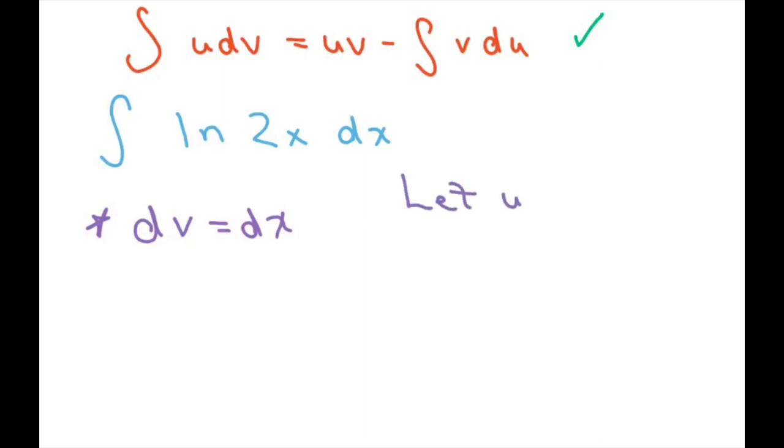So we're going to do u substitution, u equals ln of 2x. And so then the derivative of, and we're going to let derivative of v equal derivative of x.